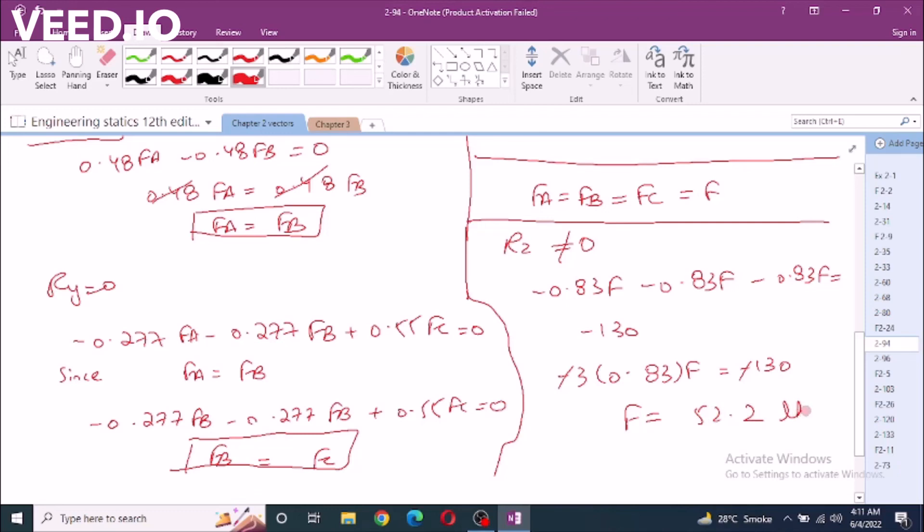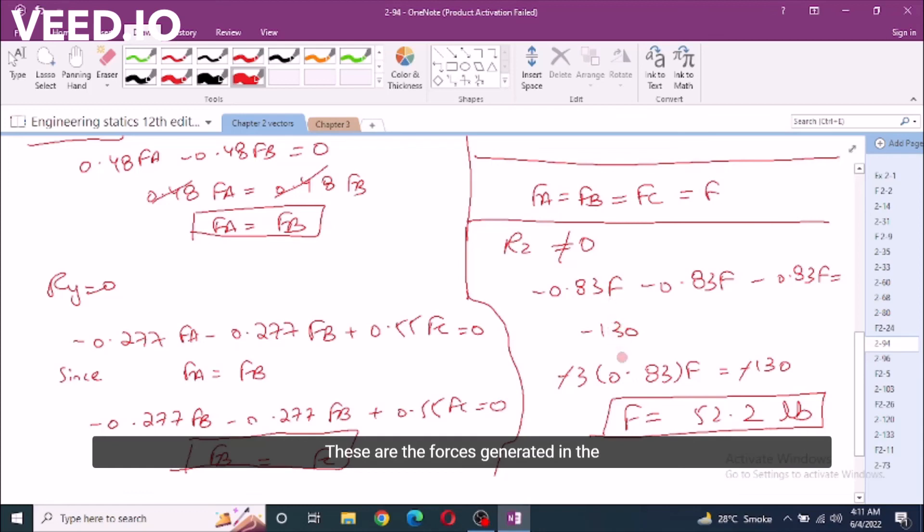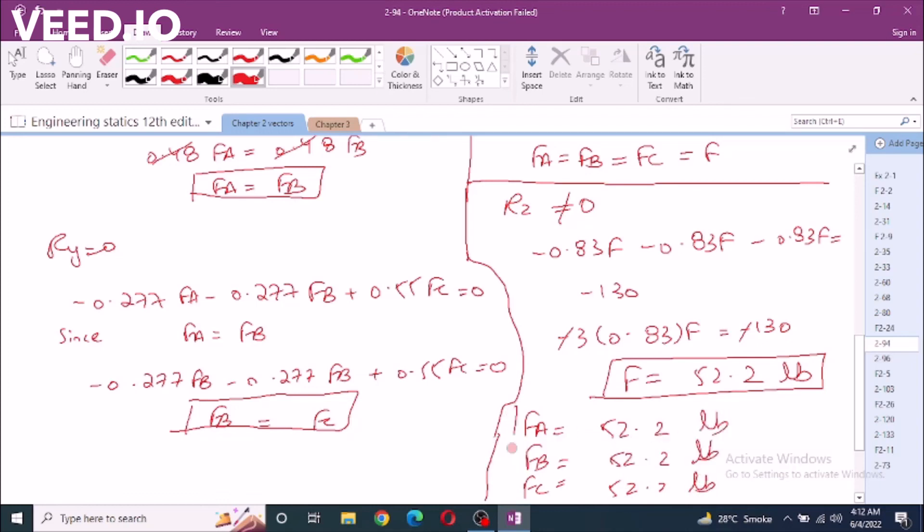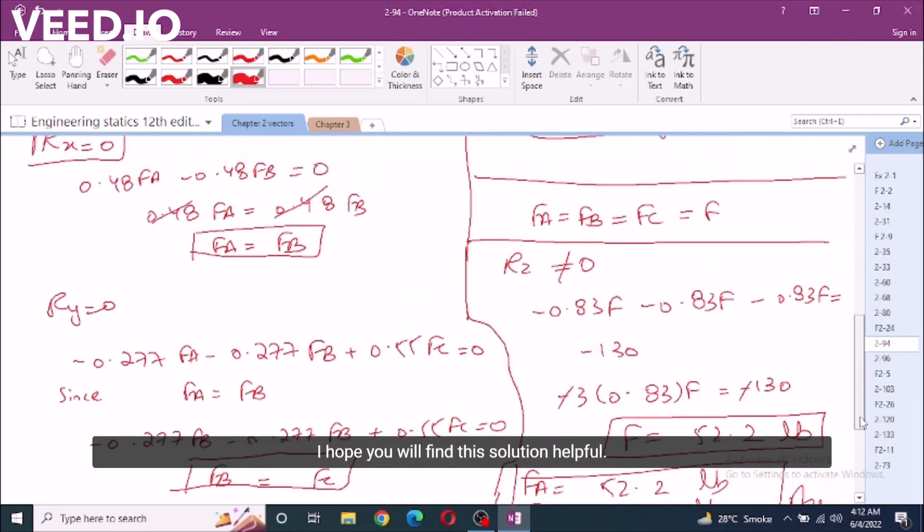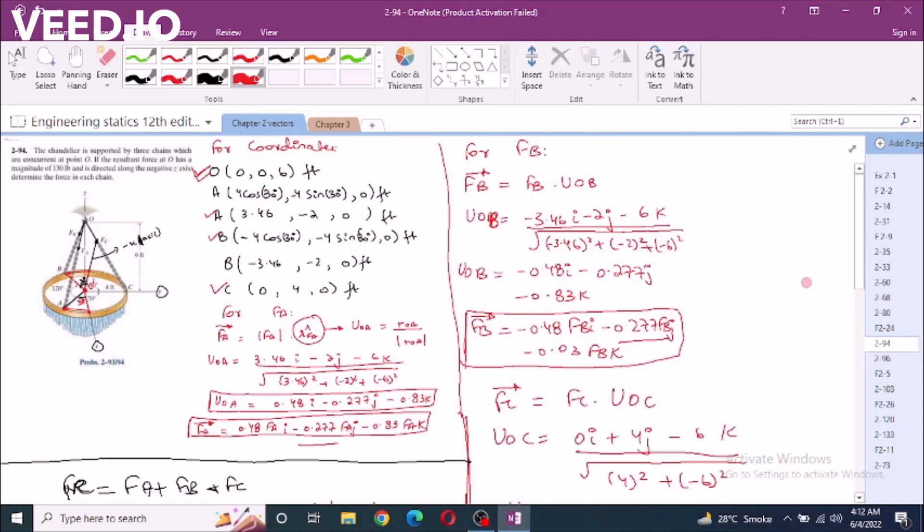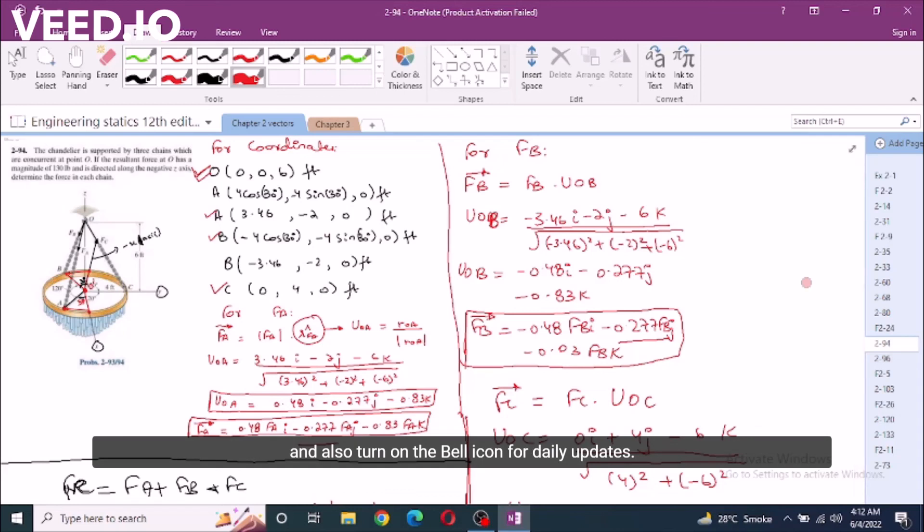Now these are the forces generated in the three chains FA, FB and FC. Each chain has a force of 52.2 lb. You can write it in the final as FA, FB, FC equals 52.2, 52.2, 52.2 lb. This is the answer of this problem. I hope you will find this solution helpful. If you do, please feel free to subscribe this channel and also turn on the bell icon for daily updates. Thank you.